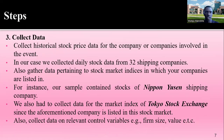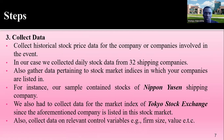Step three: collect data on historical stock prices and calculate returns for the companies in your sample. We collected data on stock prices and calculated returns for 32 shipping stocks from around the world. You must also gather data on the stock market indices in which your companies are listed, since these are used to estimate expected returns. For example, Nippon Yusen is listed on the Tokyo Stock Exchange, so we collected that index. Additionally, collect data on relevant control variables such as firm size and value.